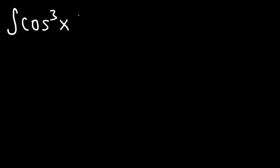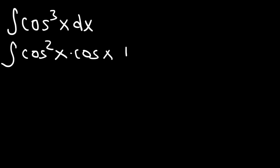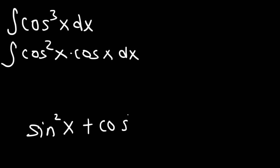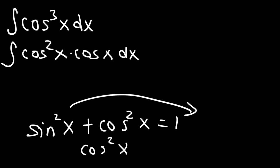Now the next topic we're going to go over is trigonometric integrals. So how can we find the integral of cosine cubed x dx? Basically, we need to do u substitution, but we need to adjust the problem. Cosine cubed we can write as cosine squared times cosine. Now if you recall, one of the Pythagorean identities is sine squared plus cosine squared equals 1, so cosine squared can be replaced with 1 minus sine squared.